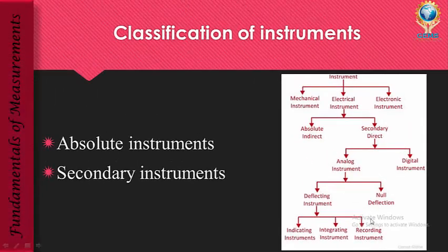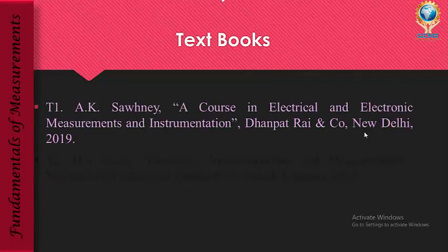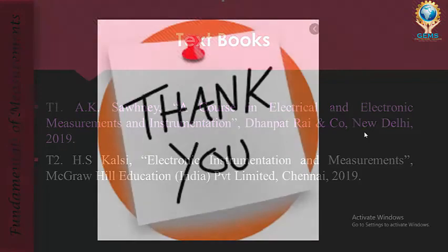These are the different classifications of instruments. For syllabus purposes, you should know what an absolute instrument is, why it is called absolute, and its examples. Similarly, you should know what a secondary instrument is, why it is called secondary, its advantages, and its examples. These are the textbooks used; this presentation is taken from the first textbook. Thank you.